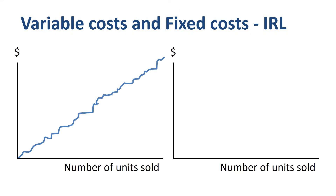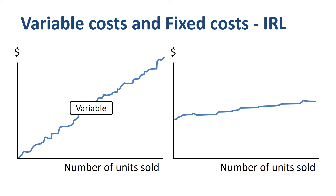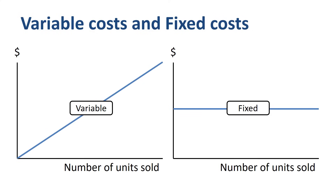Variable costs are more variable than expected — they do move up with the number of units sold, but not in a fully linear, straight-line way. Fixed costs are largely indifferent to the number of units sold, but might have some stepwise increases. Let's stick with the idealized textbook definitions in this video, but don't say I didn't warn you when you try to apply the contribution margin concept in your own business.